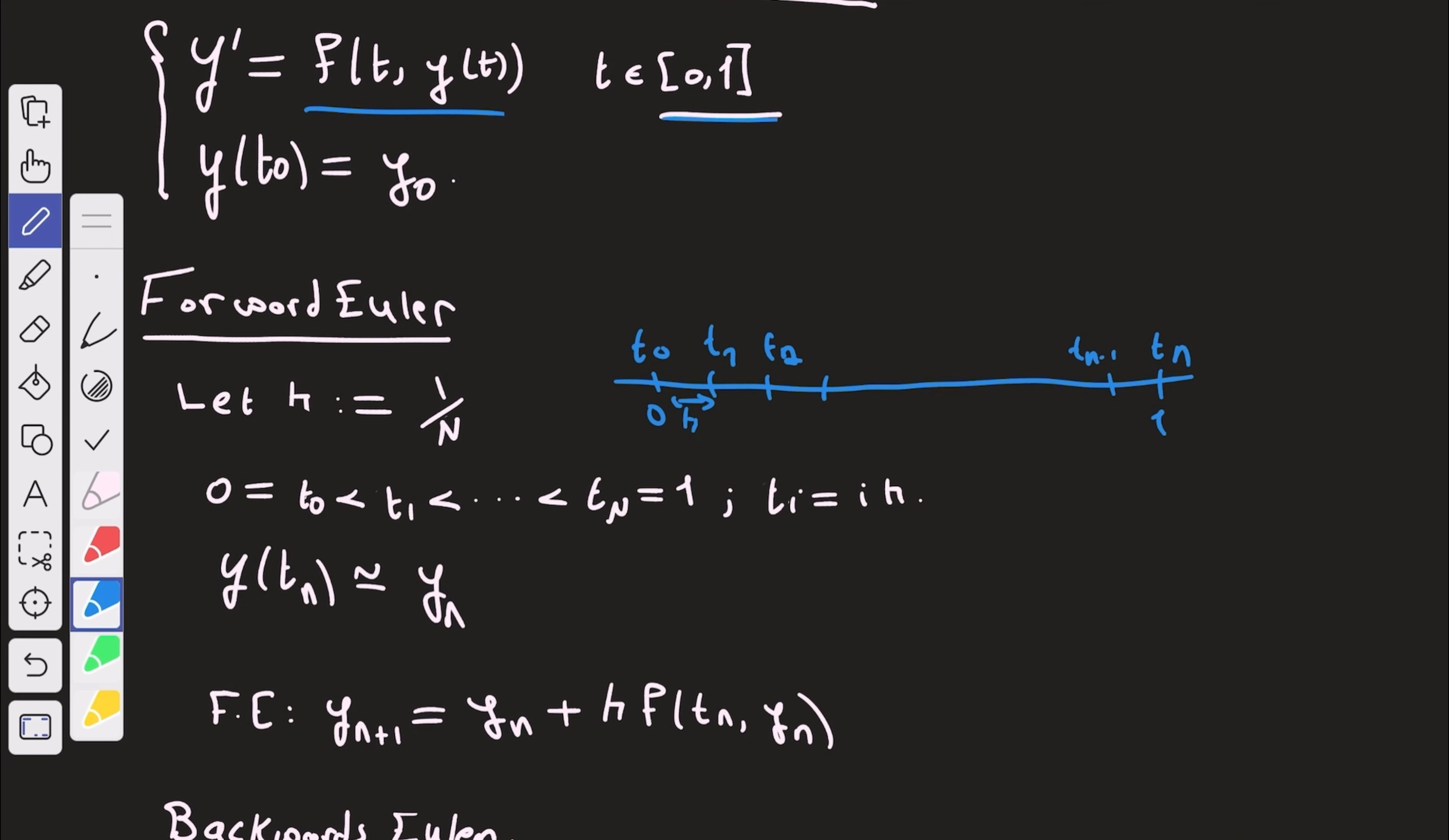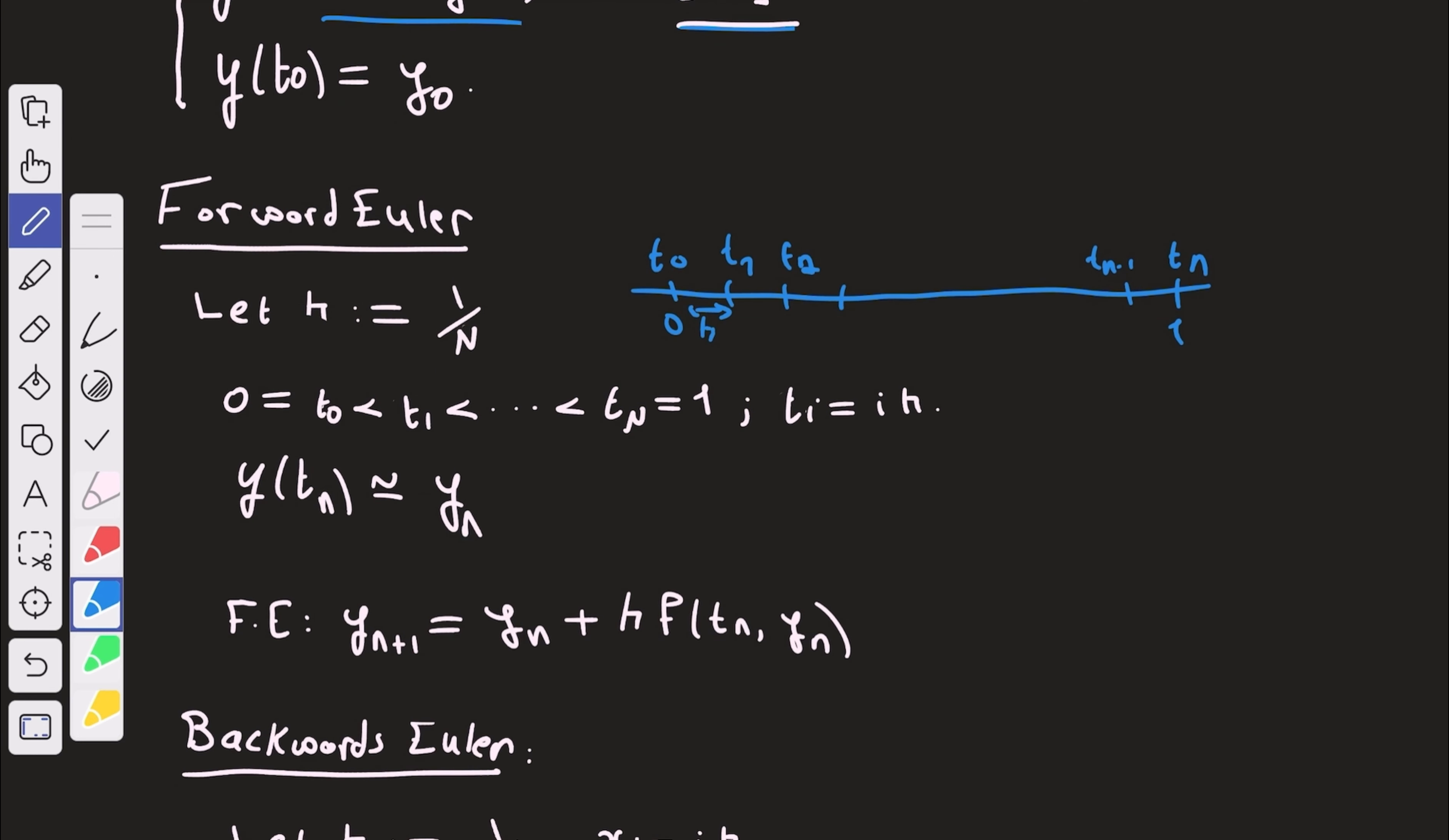So why are we doing that? We're doing that because we need a numerical solution. We need the value of y at specific points, right? Because we don't want an analytic solution. We don't want a continuous solution. So after we partition the domain, we're interested in the value of y at tn.